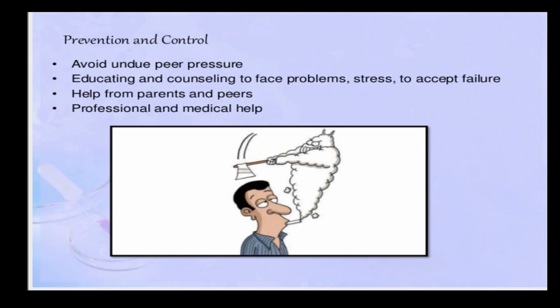How can we prevent and control drug and alcohol abuse? First, avoid undue peer pressure. Adolescents are often given high pressure to perform beyond their capacity, whether in studies, sports, or other activities — such pressure can lead a child to get addicted to drugs or alcohol. Second, educating and counseling children to face problems, stress, and to accept failure is important. Third, help should be rendered by parents and peers. Finally, professional and medical help should be sought when needed.